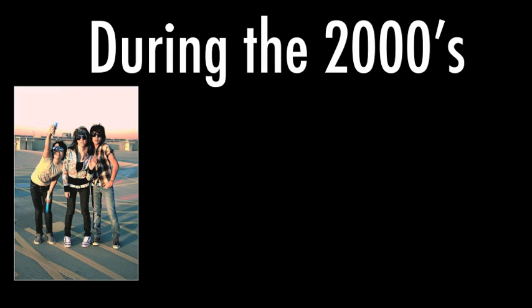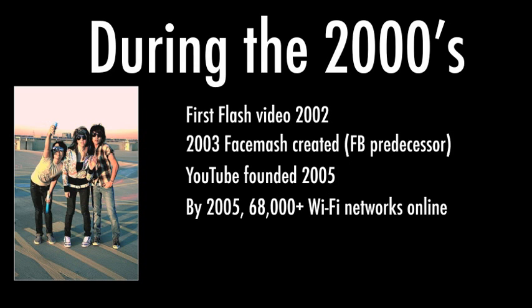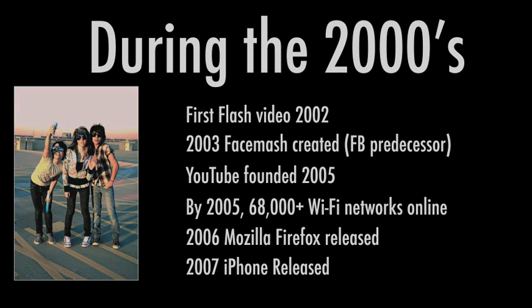In the 2000s, the first Flash video appeared in 2002, paving the way for YouTube. In 2003, Facebook came on the scene, created by Mark Zuckerberg in his dorm room — the original product was called FaceMash. YouTube was founded in 2005, which had a huge impact on technology and the internet in general. By 2005 there were 68,000 Wi-Fi networks. In 2006, Firefox was released, and in 2007 the iPhone came out — that's a brief and rapid history of the internet.